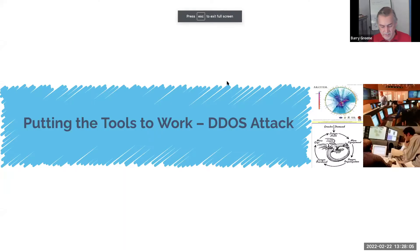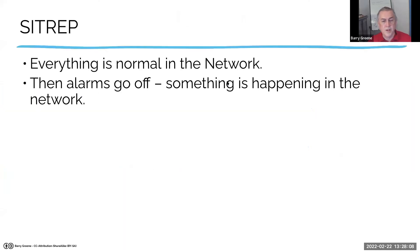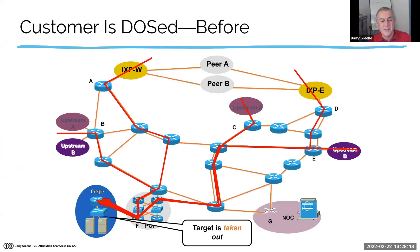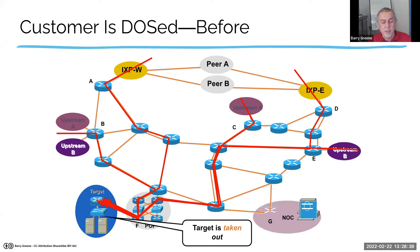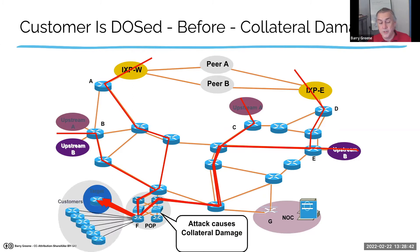Let's do a hypothetical DOS attack. Here you are, situation normal, having your coffee, and all of a sudden alarms start going off — something's happening in the network. Here's my network: I'm sitting on or am an ISP watching for DOS attacks across my network. One of my customers is being hit with a DOS attack and alarms are going off because it's causing problems in other parts of the network — collateral damage.